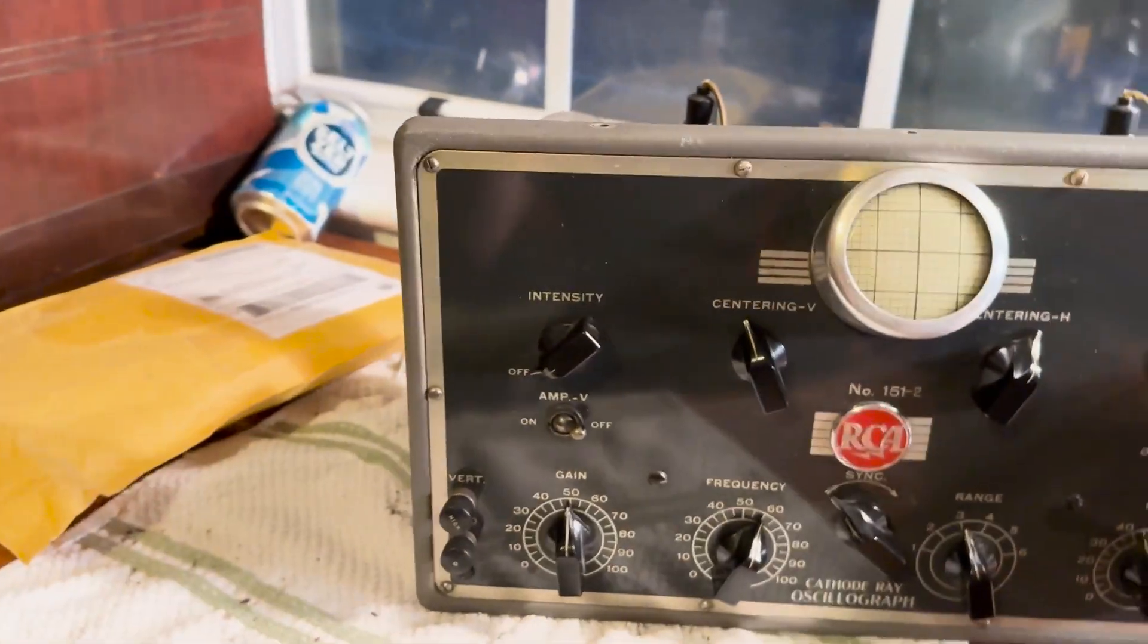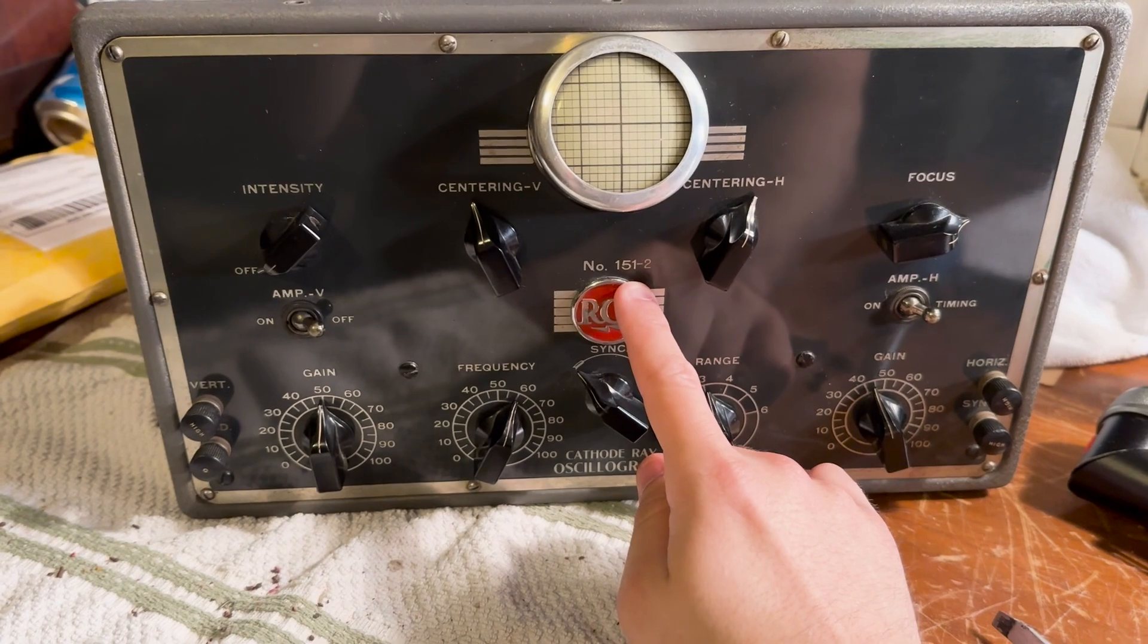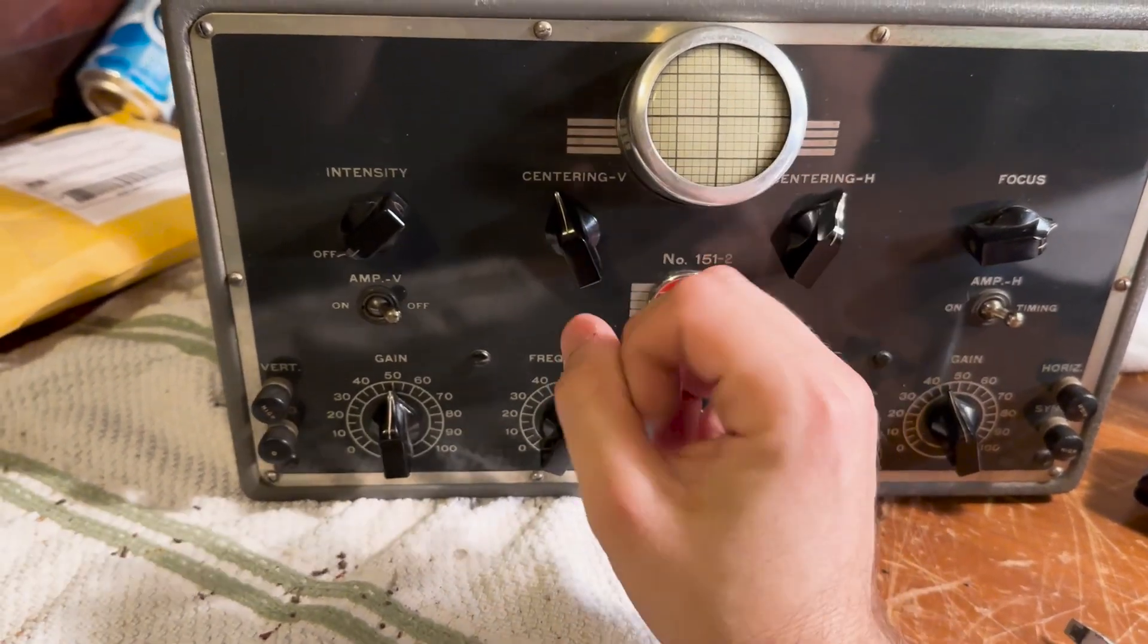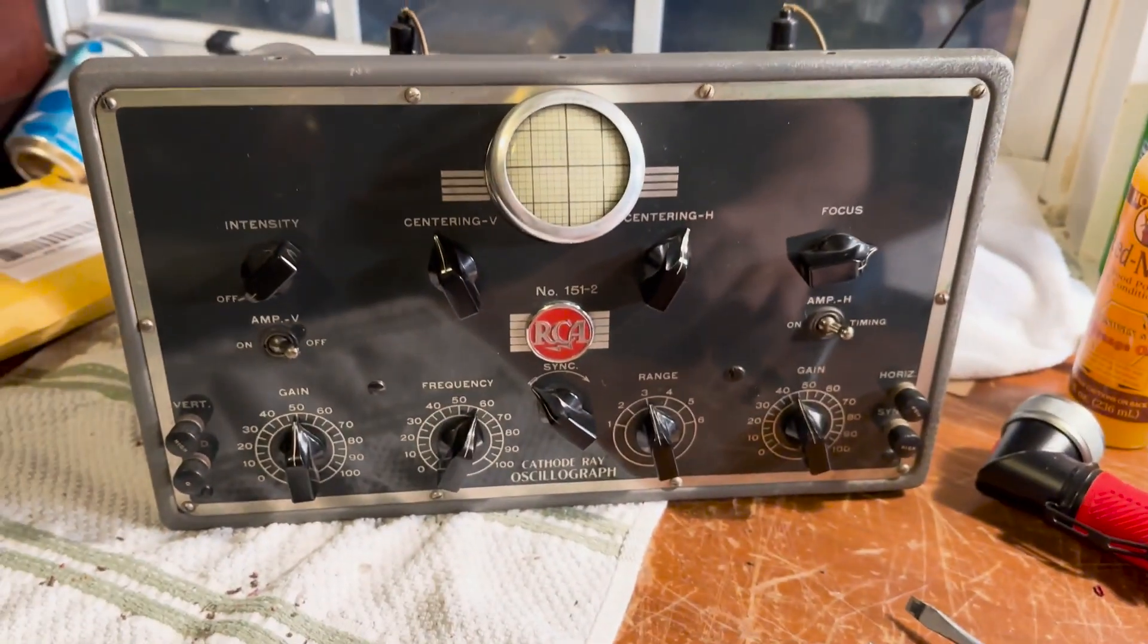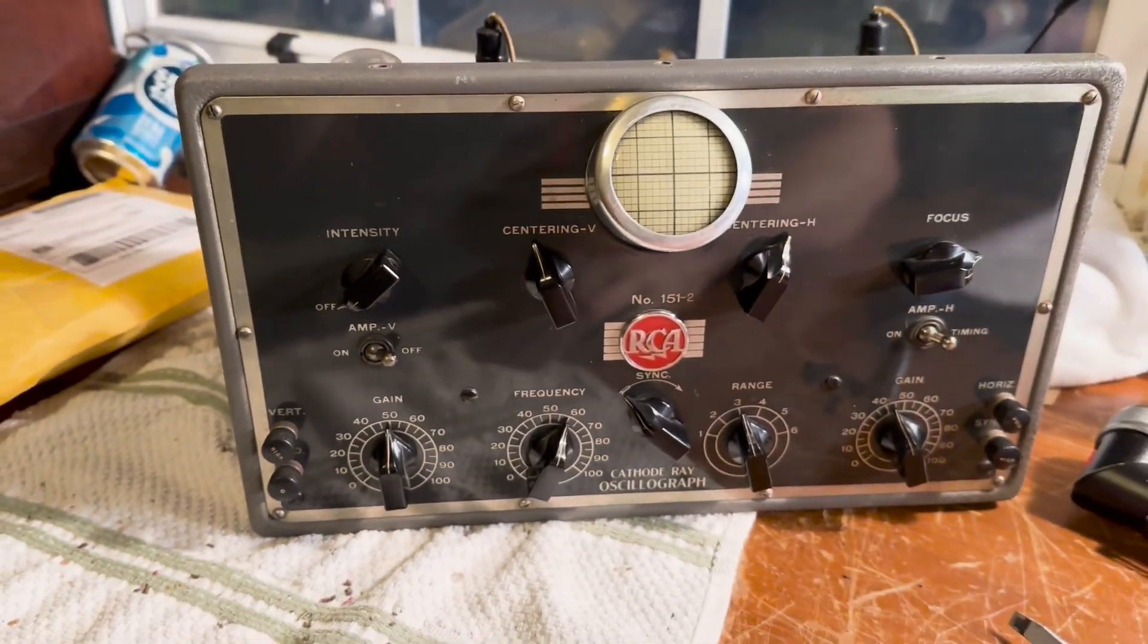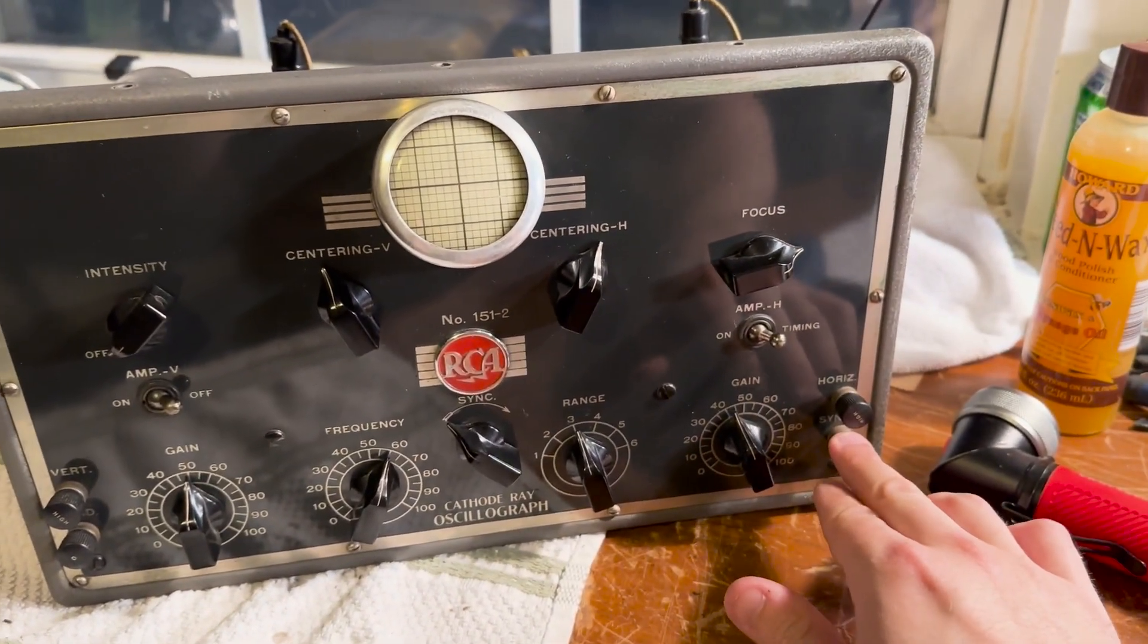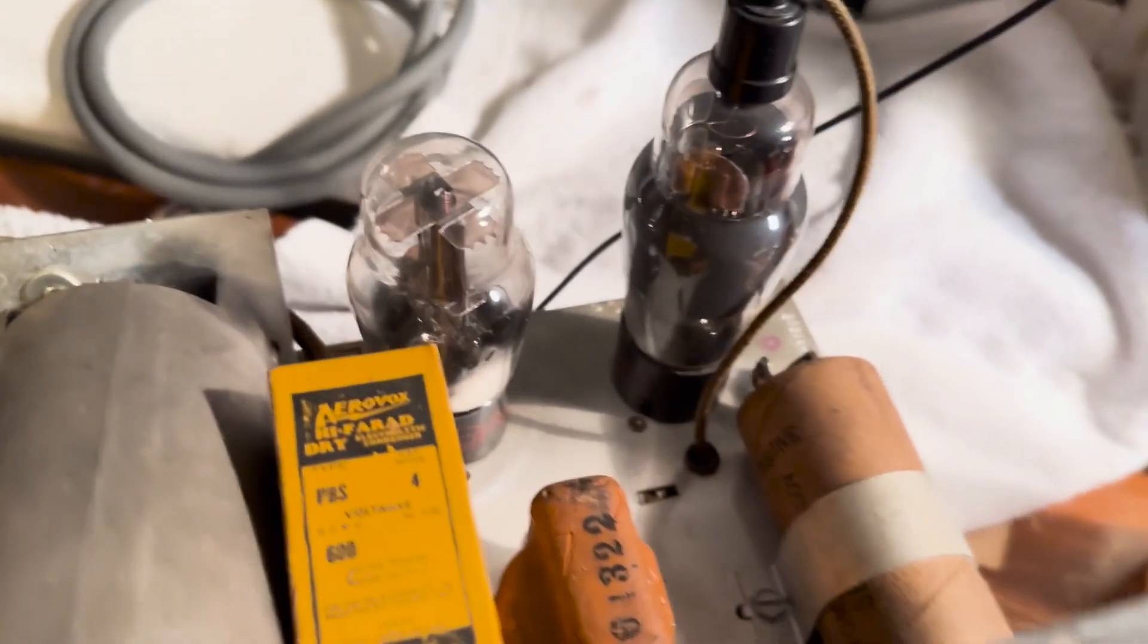So there was a first model of this that was the 151-1 and it had, I believe, a one-inch picture tube. It was a lot smaller than this and it didn't jut out from the cabinet. But yeah, how about that? Vertical and horizontal attachments there. Oh yeah, this'll be sweet.